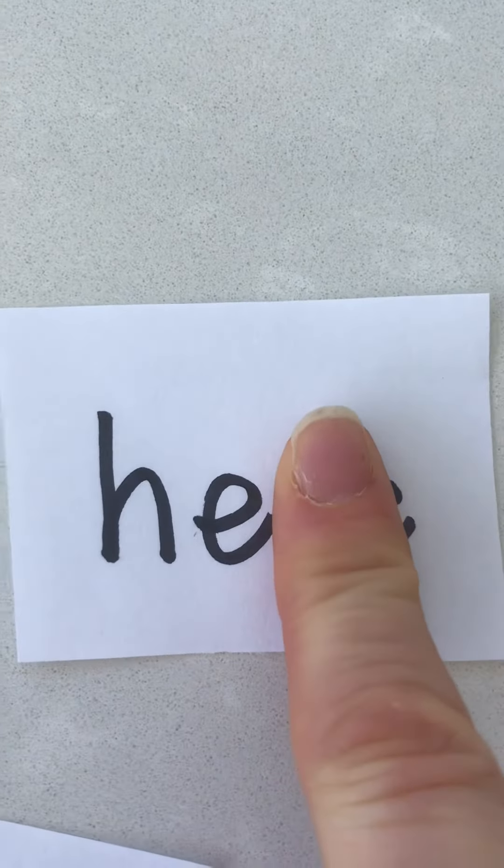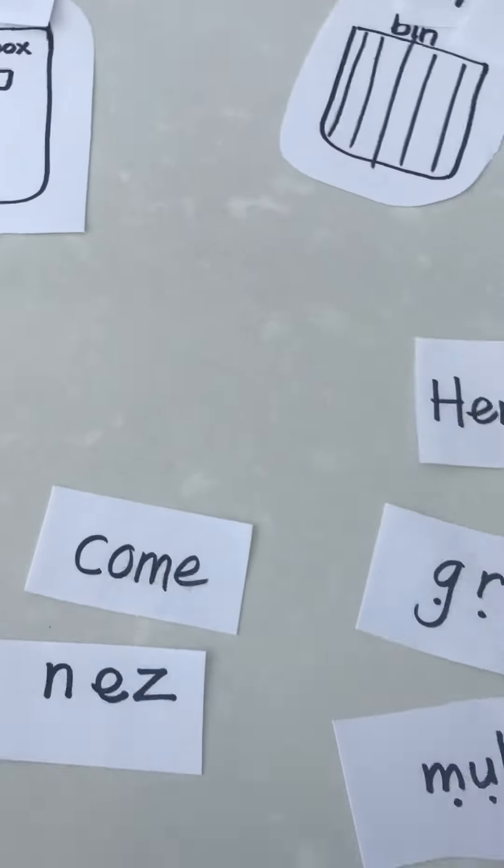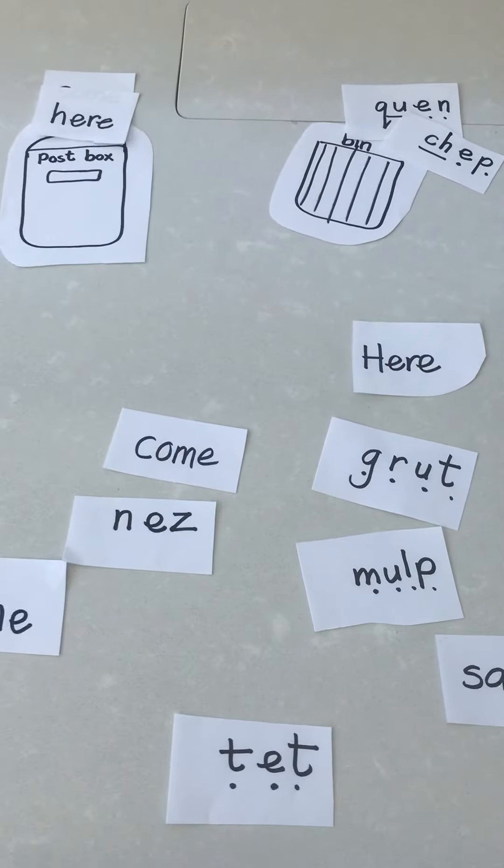Then we'll go here. Here. So here's a real word. We'll put here in the postbox. And keep continuing on like that. And that is the postbox and the bin game.